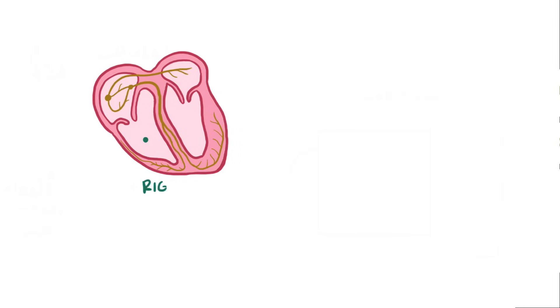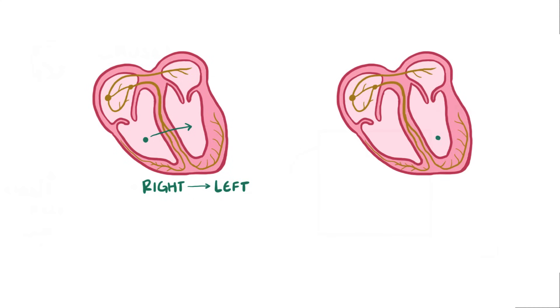If the ectopic focus originates in the right ventricle, the wave will depolarize the right ventricle first and then the left ventricle, and this produces a QRS complex that looks like a left bundle branch block. If the ectopic focus originates in the left ventricle, the wave will depolarize the left ventricle first and then the right ventricle, which produces a QRS complex that looks like a right bundle branch block.